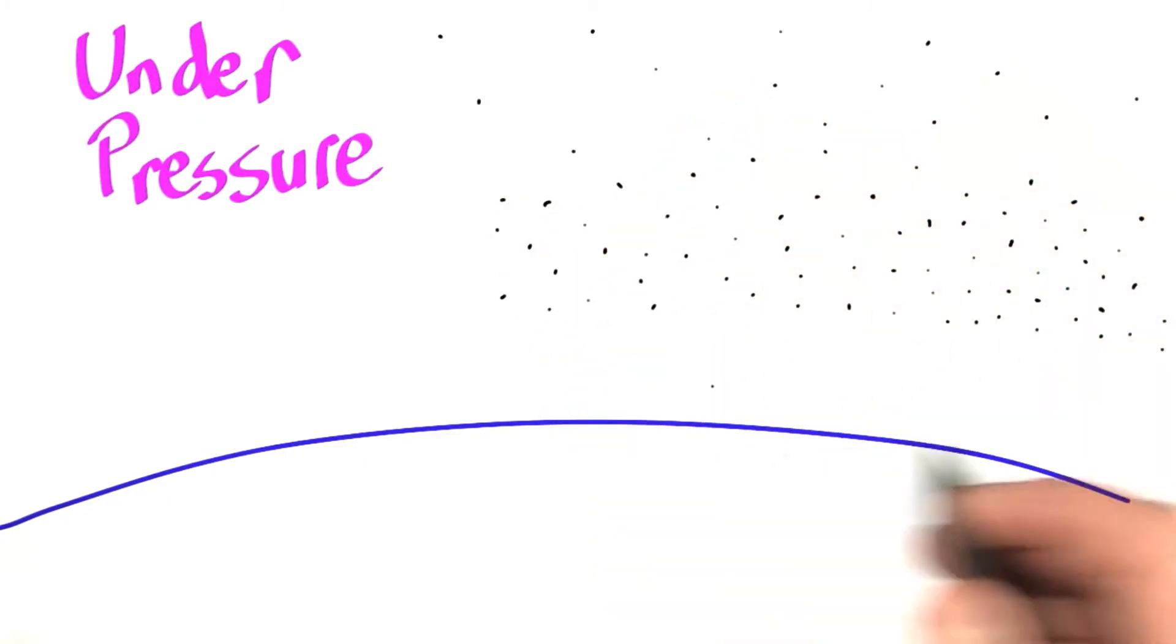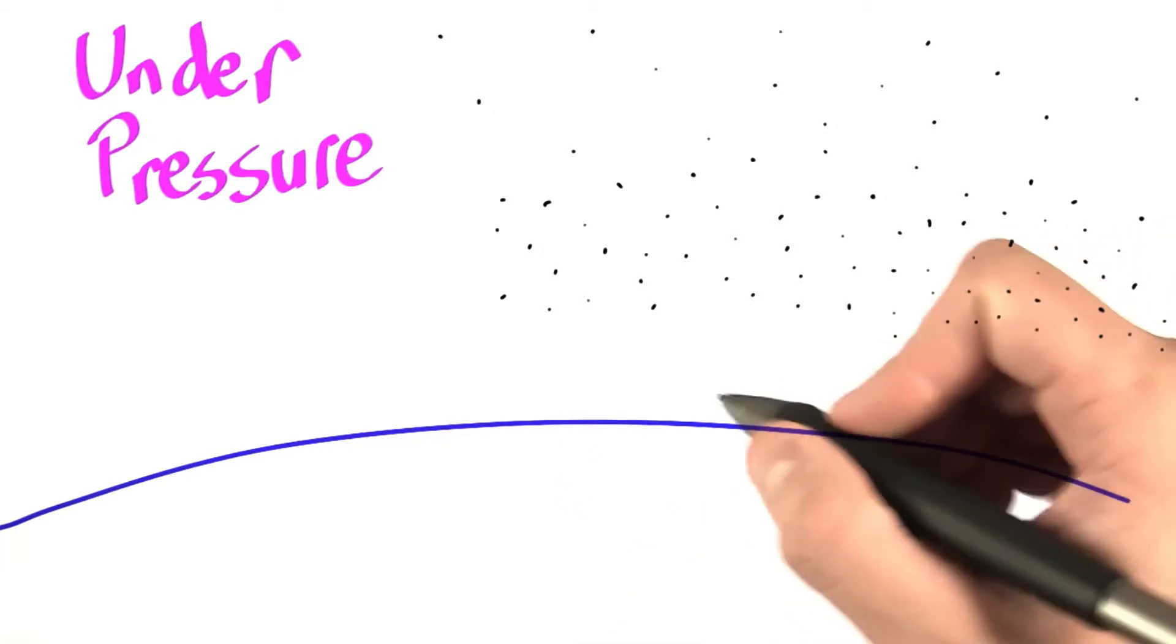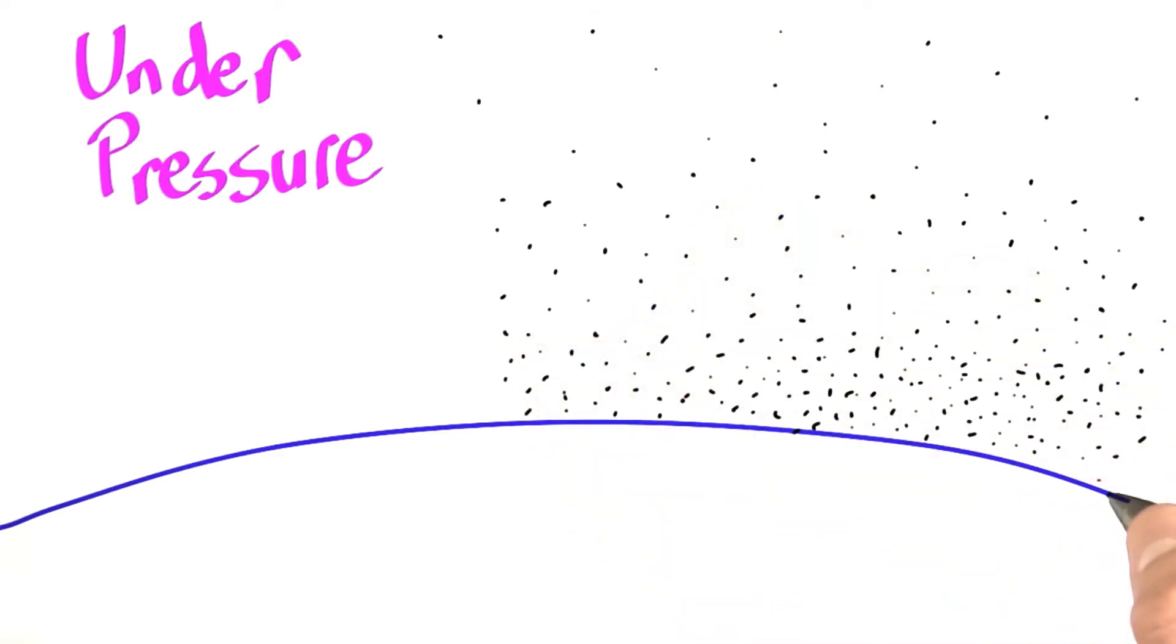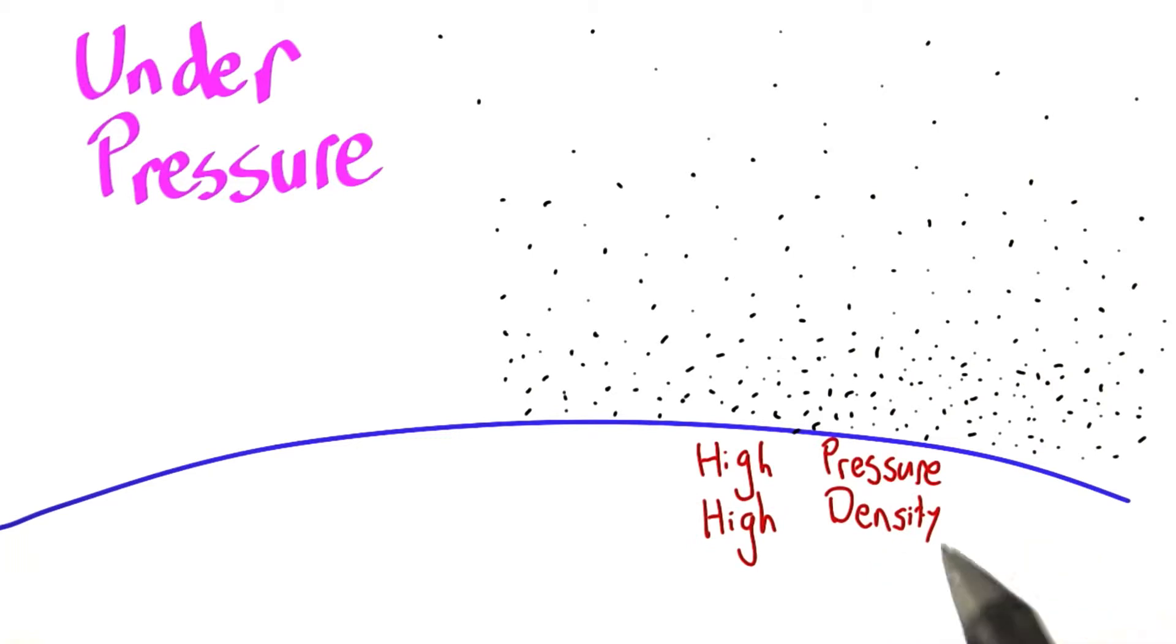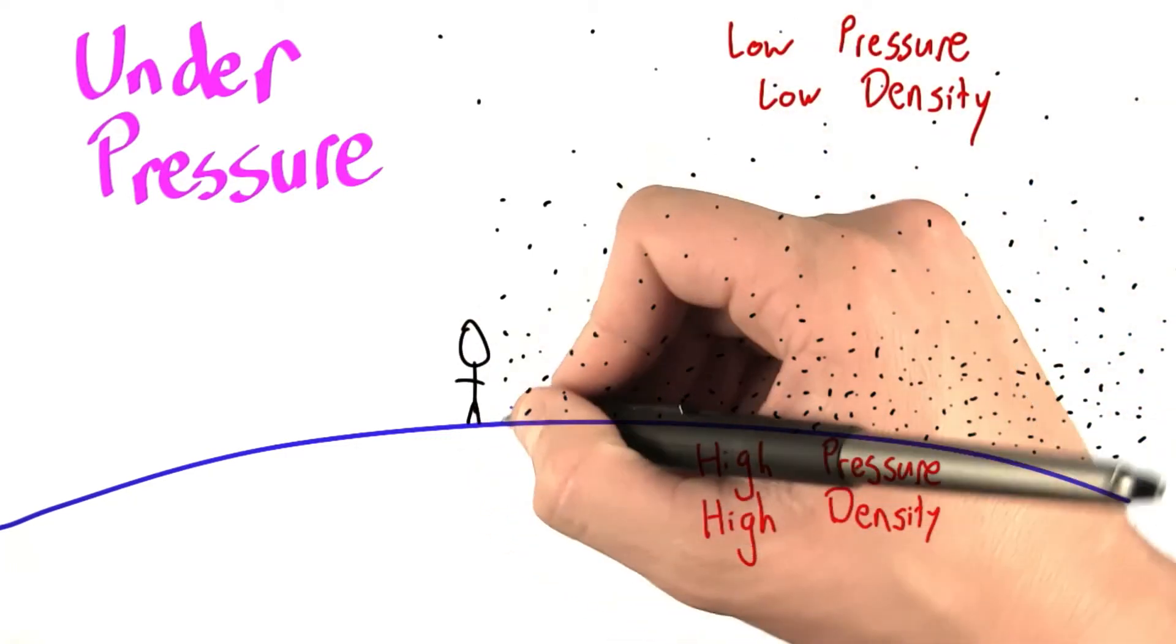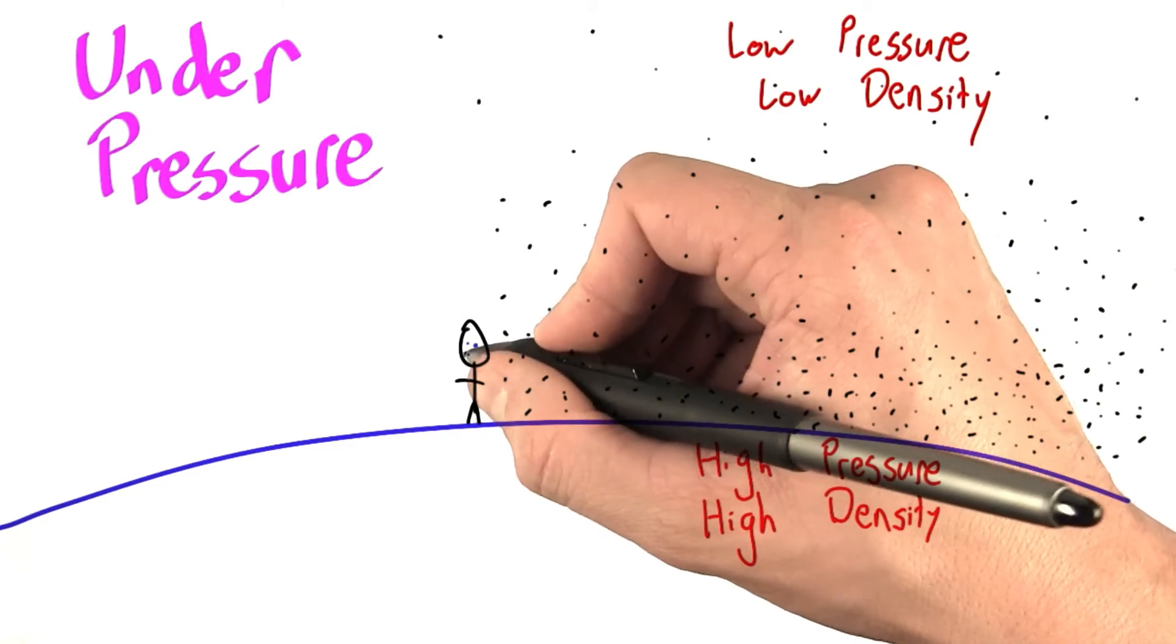And as we go even further down towards the surface of the Earth, where us humans tend to live, the air gets even more densely packed. And so we see that down near the surface of the Earth, where we have high pressure, we also have a high density of air molecules. And this high density of air molecules makes us humans living at the surface very happy.